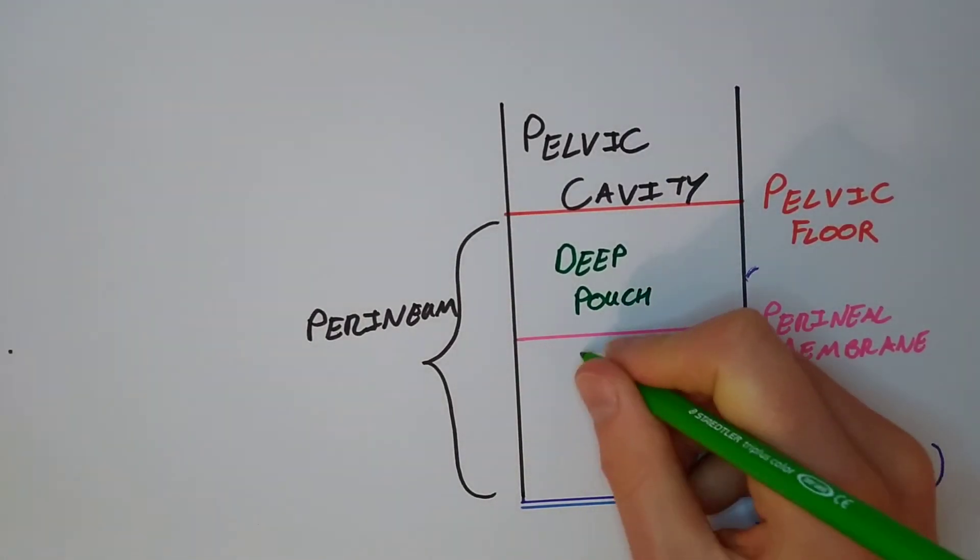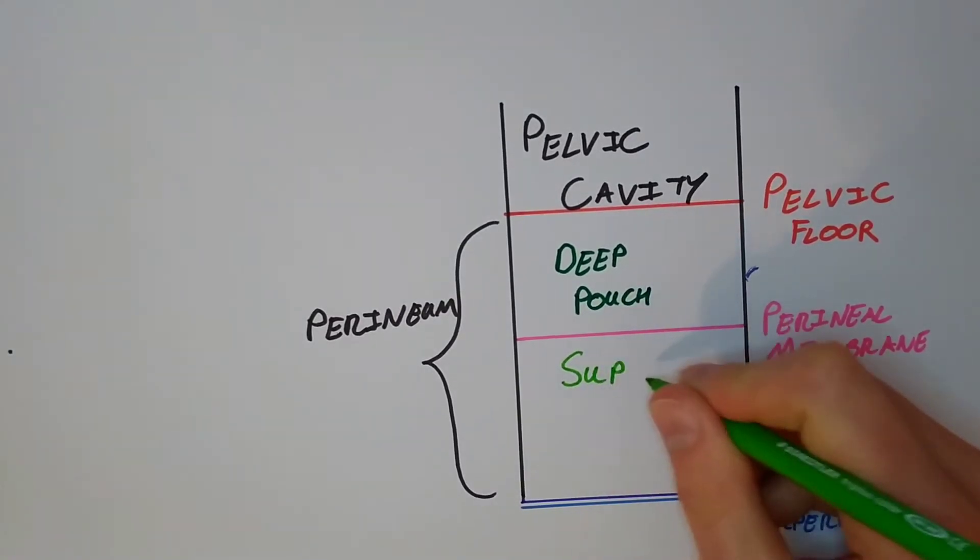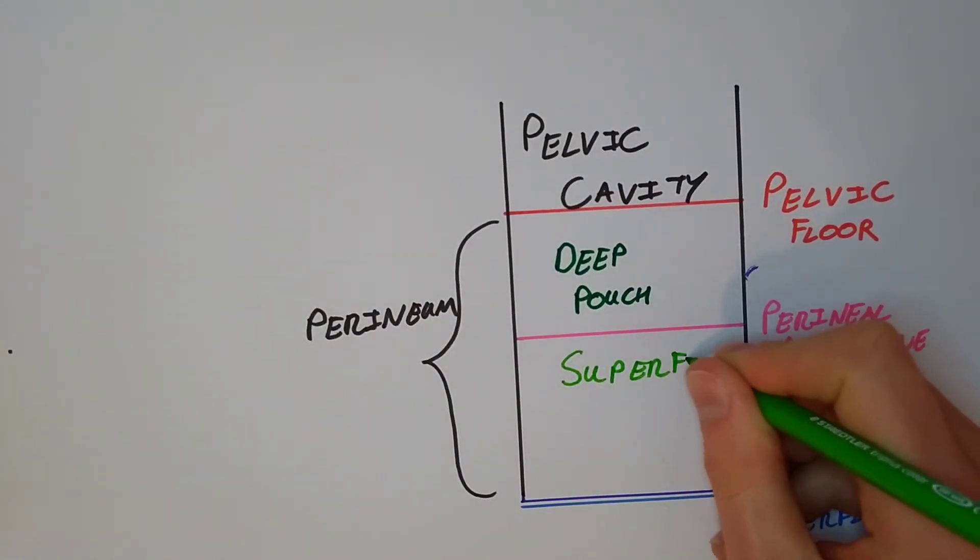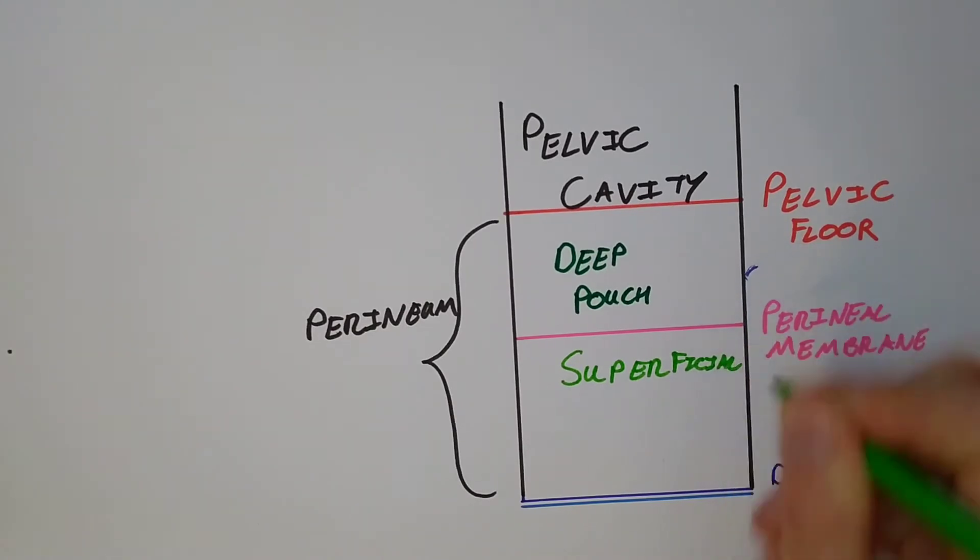The superficial one is going to contain the roots of the erectile tissue, the crura and the bulb of the penis or clitoris, as well as our superficial transverse perineal muscles.